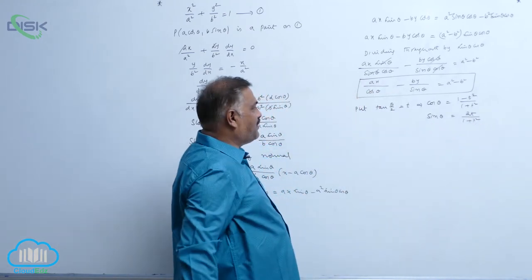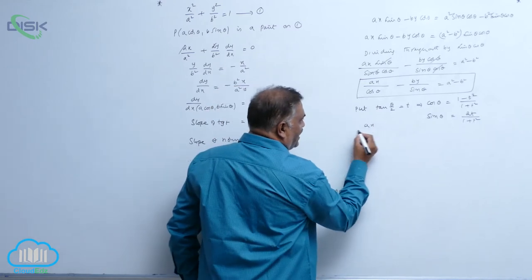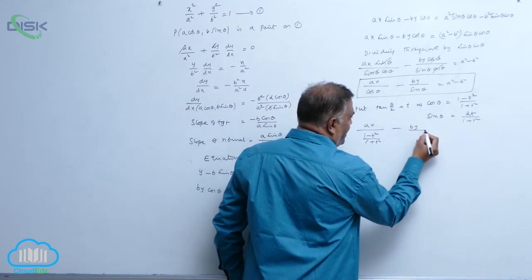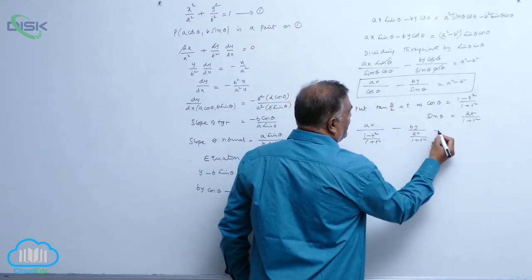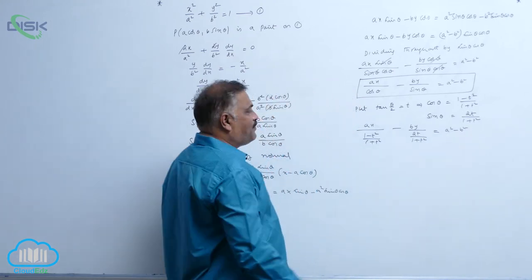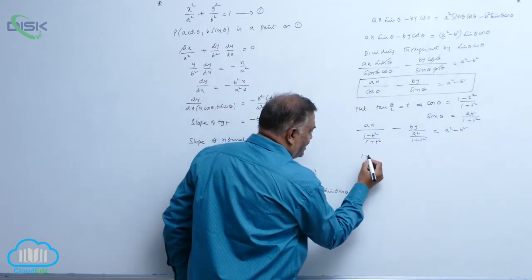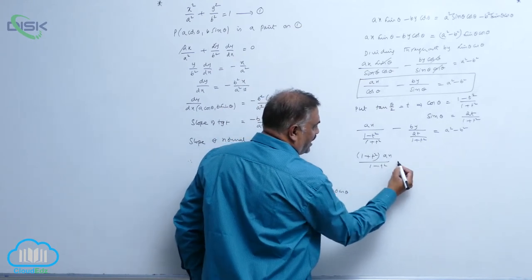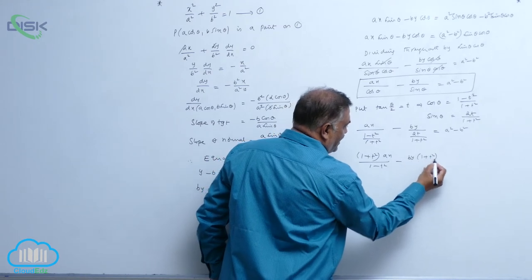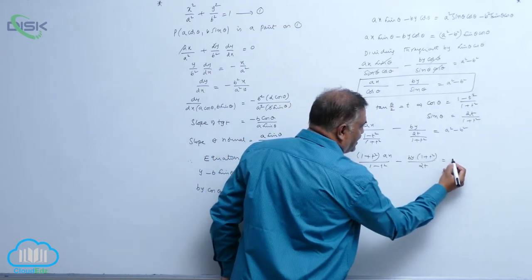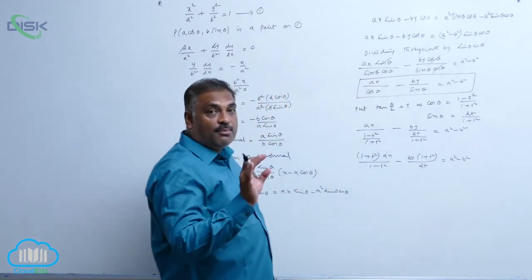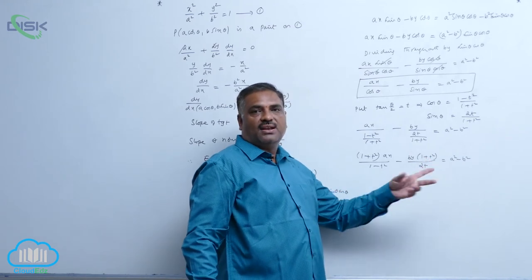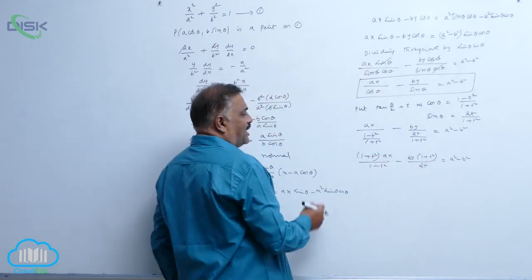Substituting in the given equation: a x divided by (1 minus t squared)/(1 plus t squared) minus b y divided by 2t/(1 plus t squared) equals a squared minus b squared. Taking (1 plus t squared) to the numerator: a x by (1 minus t squared) minus b y(1 plus t squared) by 2t equals a squared minus b squared. Note here it is 1 minus t squared and here it is 1 plus t squared.